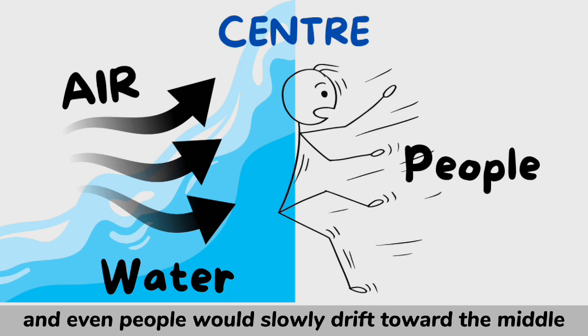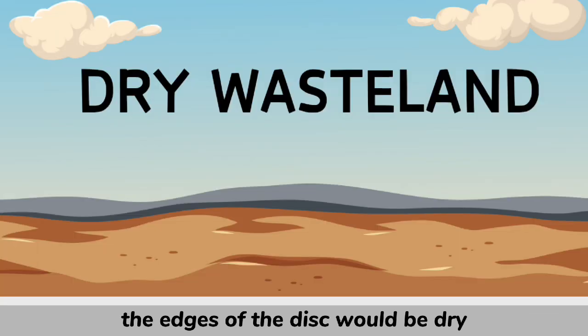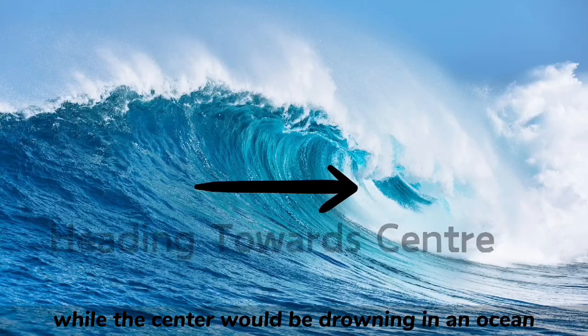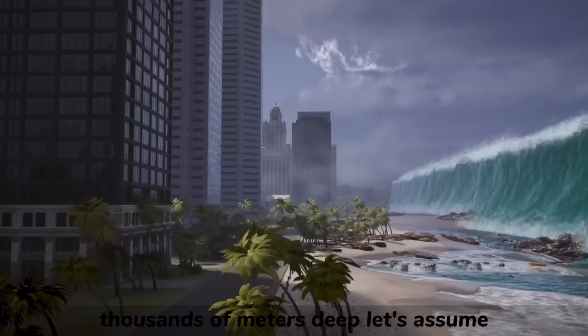This also means that water, air, and even people would slowly drift toward the middle. The edges of the disk would be dry, airless wastelands, while the center would be drowning in an ocean thousands of meters deep.